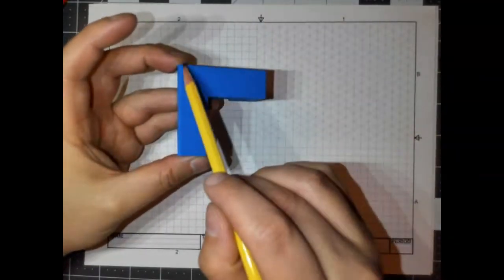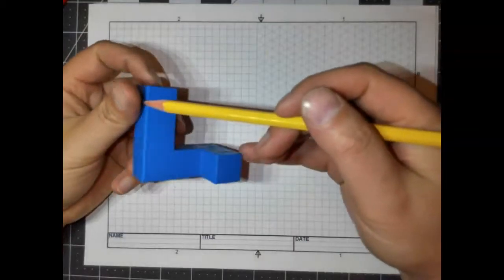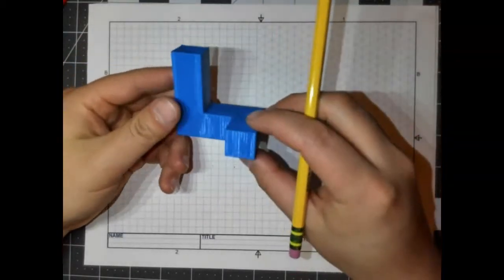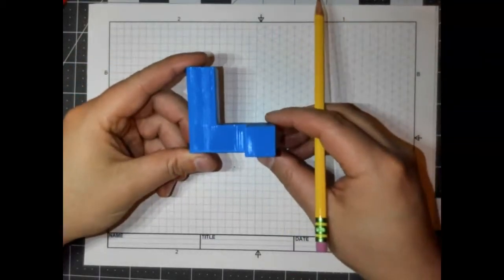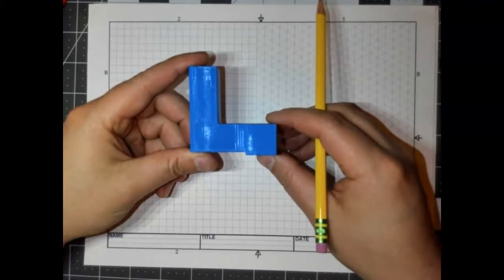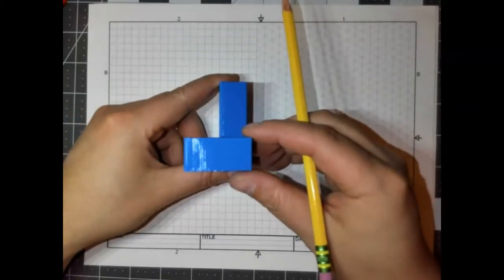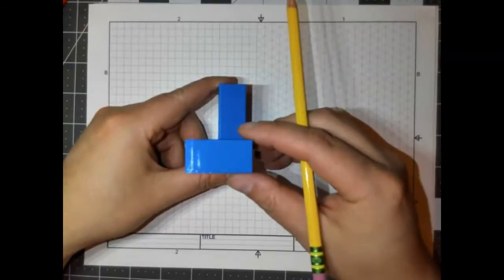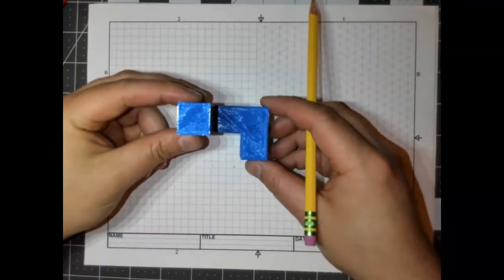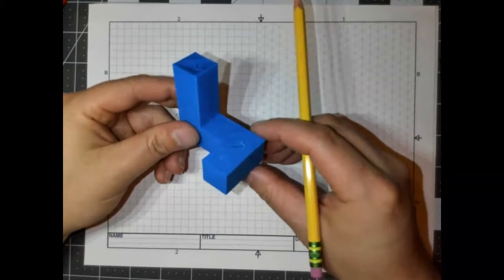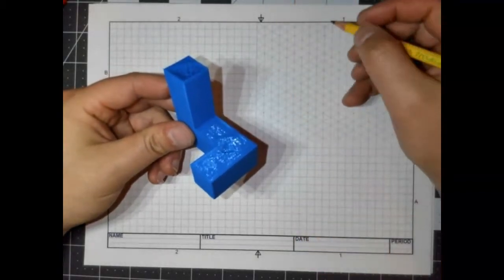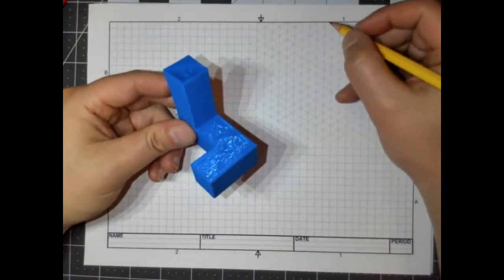This side right here and this side, this length right here, those are the longest lengths. So how I'm holding it right now, that will be the best front view. This is the right side view. And then this would be the top view. Let's draw it in isometric first. So remember, we're doing two by two cubes.